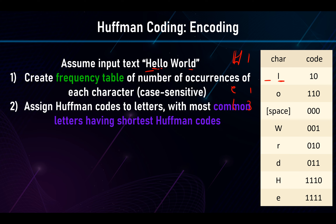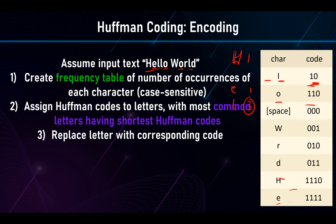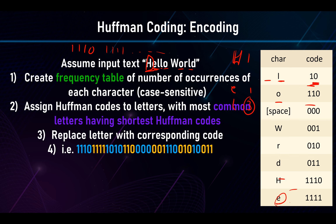Since lowercase l is the most common with three occurrences, it gets the shortest Huffman code. The second most common is lowercase o with two occurrences, getting the second shortest code. Characters like h, e, d, etc., each occur only once and get the longer codes. We then go left to right through the text, replacing each character with its corresponding Huffman code — so H becomes '111 0', e becomes '1111', and so on for all characters.